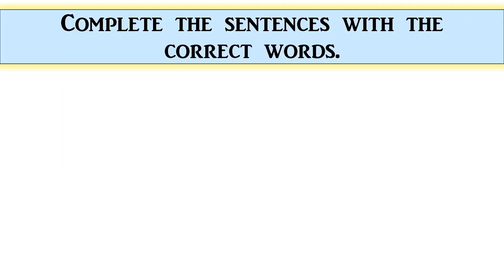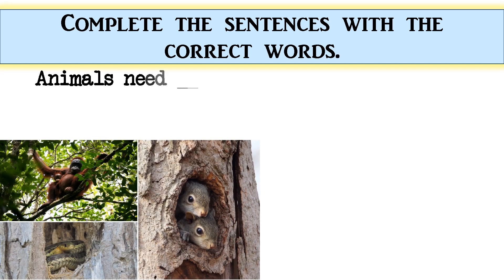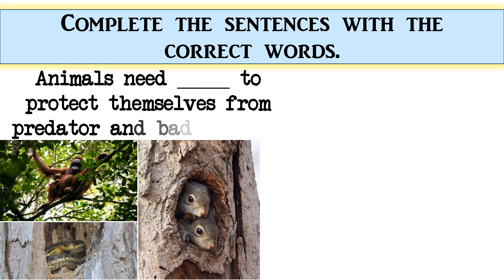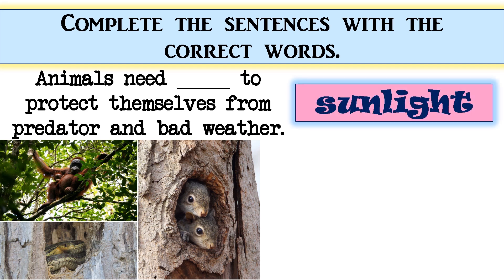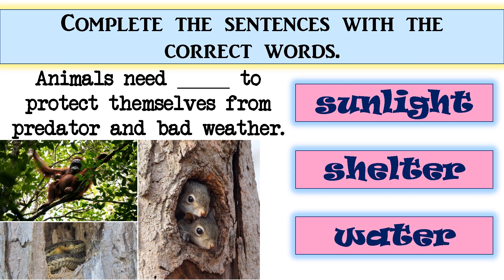Complete the sentences with the correct words. Animals need blank to protect themselves from predators and bad weather. The options are: sunlight, shelter, or water. The correct answer is shelter. Very good!